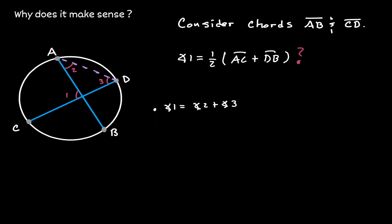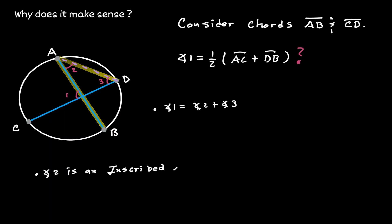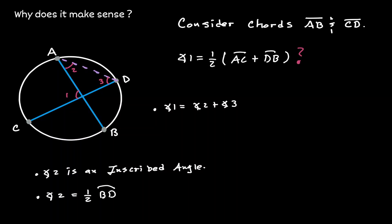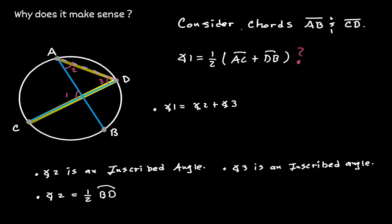If we concentrate on angle 2, notice that it is an inscribed angle. Therefore, angle 2 is half the measurement of the opposite arc, which in this case is arc BD. Similarly, angle 3 is also an inscribed angle, which means it equals half the opposite arc, arc CA.